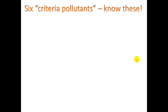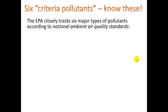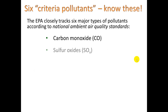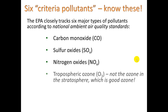The six criteria pollutants — you should definitely know these for the AP exam. They are pollutants that the EPA tracks closely: carbon monoxide, sulfur oxides, NOx (nitrogen oxides), tropospheric ozone — not stratospheric ozone, which is good ozone — particulate matter, and lead.